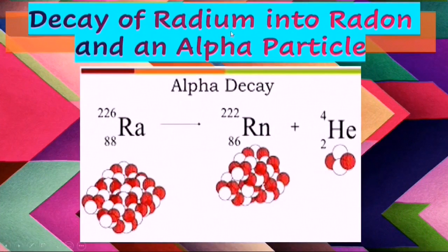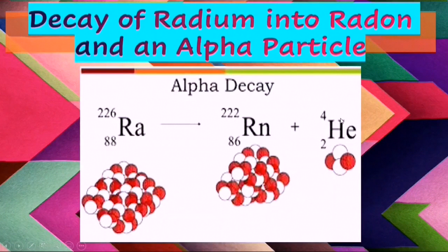Decay of Radium-226 into Radon-222 with the emission of an alpha particle is another example of alpha decay.